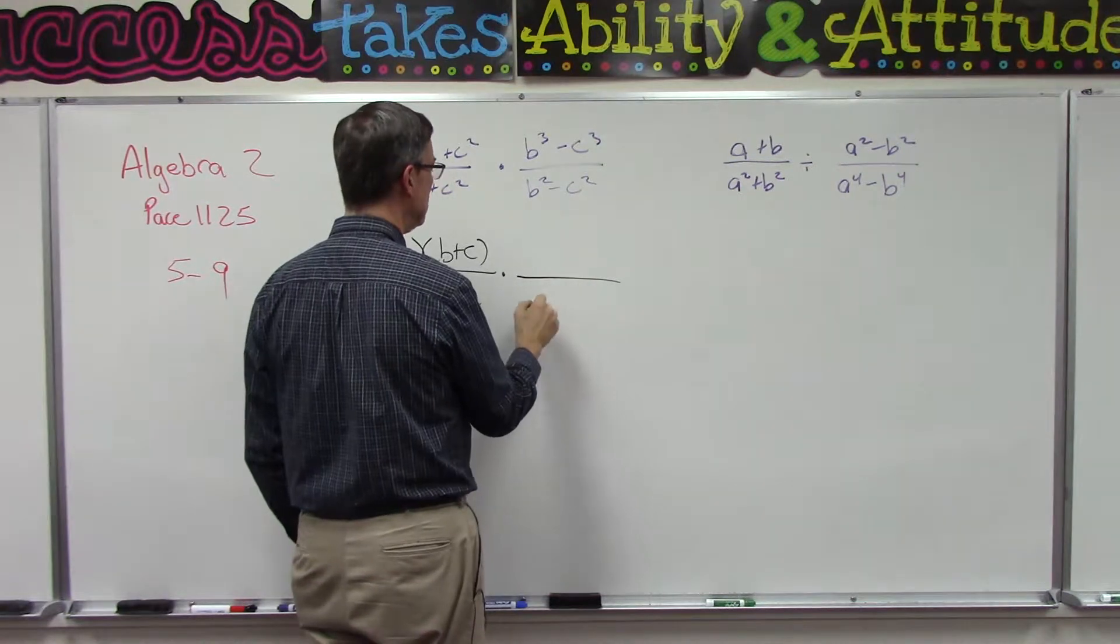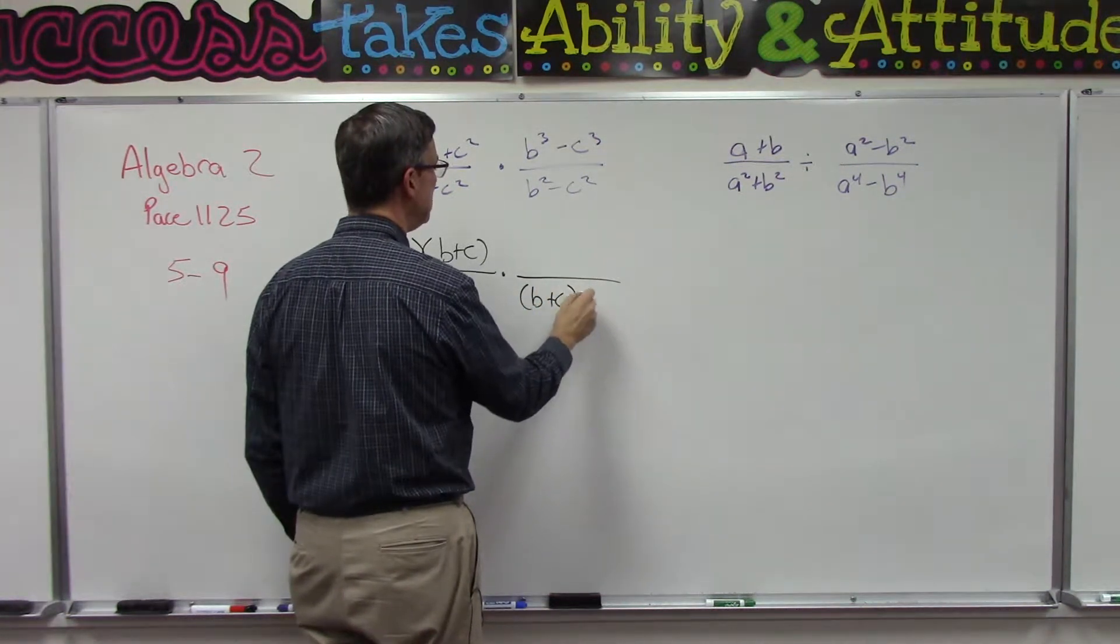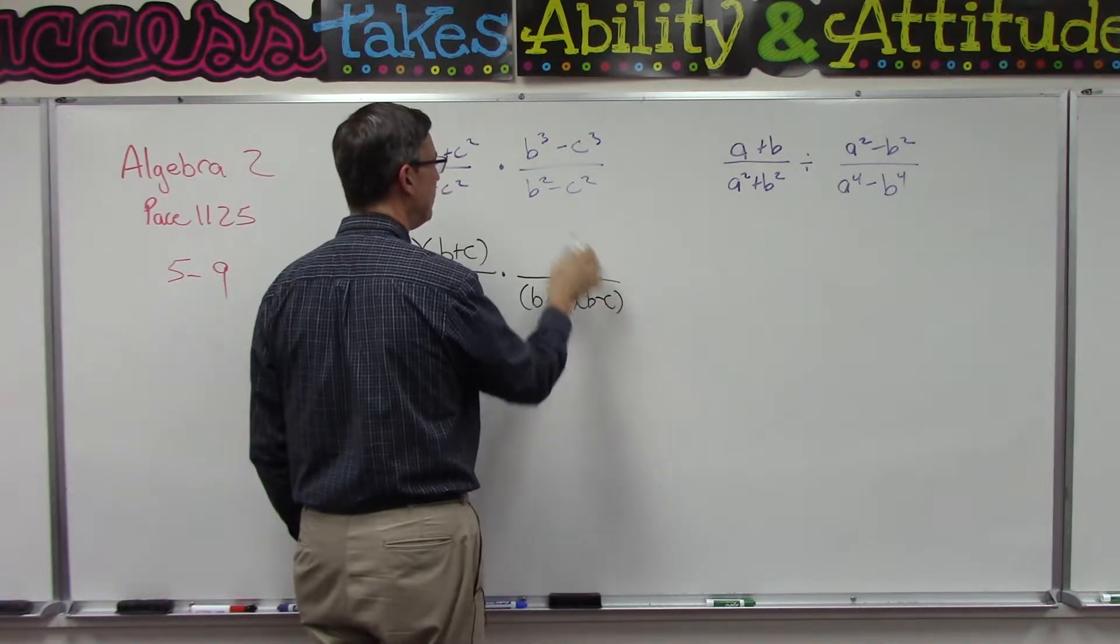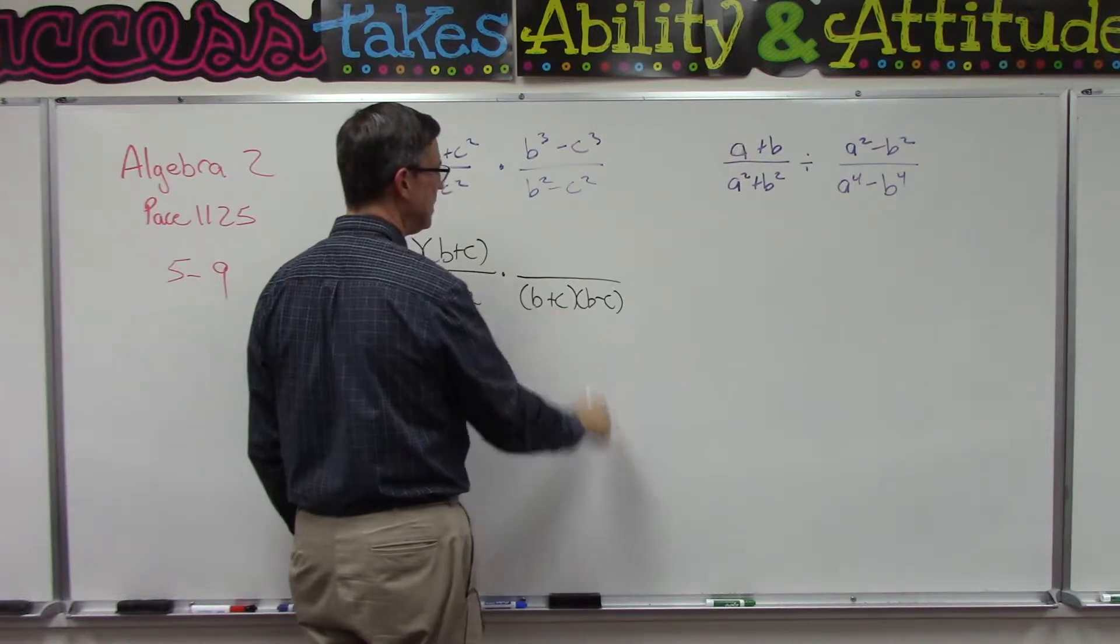Let's take this - this one's easy. b² - c² is (b + c)(b - c) because we have the difference of perfect squares. So put the b in the front of both, c at the back, plus minus, boom, we're done.